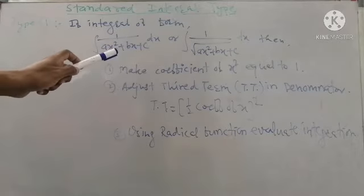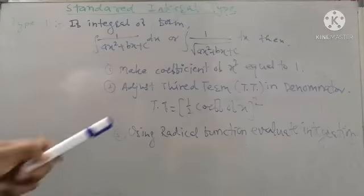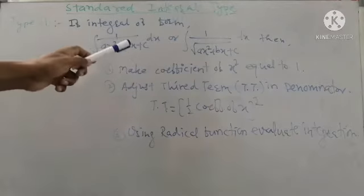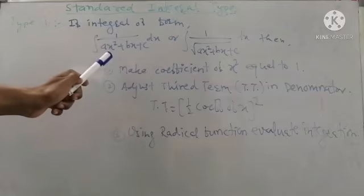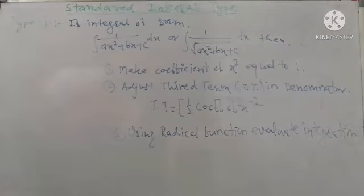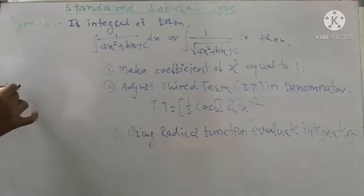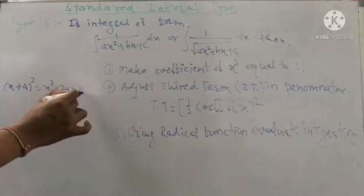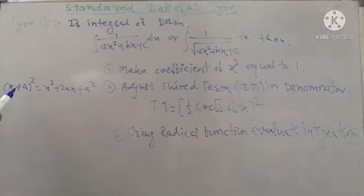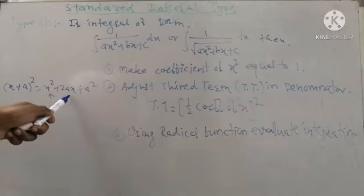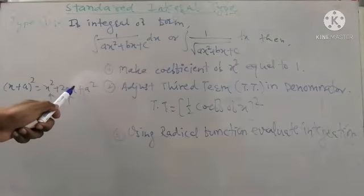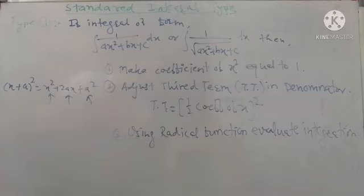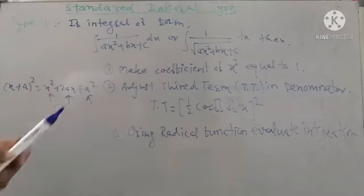To solve a Type 1 integral, first make the coefficient of x² equal to 1, so that the denominator contains the term x² with coefficient 1, a term of x, and a constant. As we know, (x + a)² expands to x² + 2ax + a², containing three terms: x² is the first term, x is the second term, and a constant square is the third term.